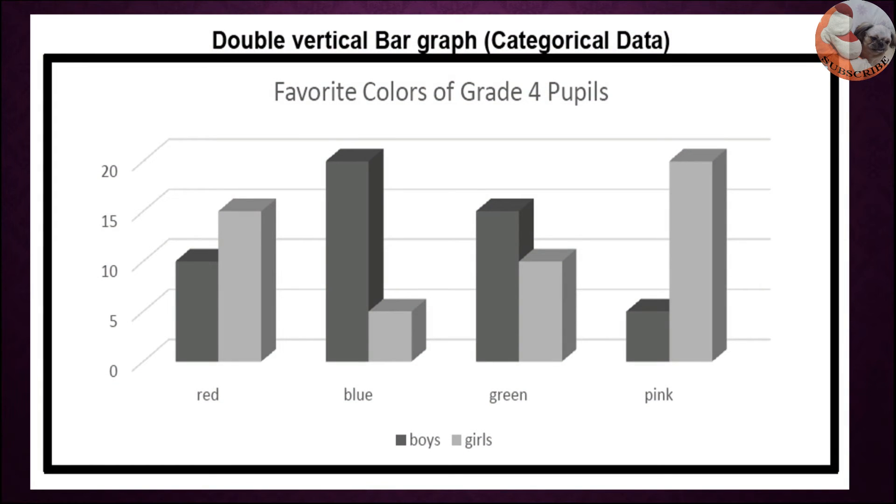Next we have double vertical bar graph. The title of the bar graph is favorite colors of grade 4 pupils. There are four colors: red, blue, green, and pink. The bar at the left represents the data for boys, while the bar at the right represents the data for girls.